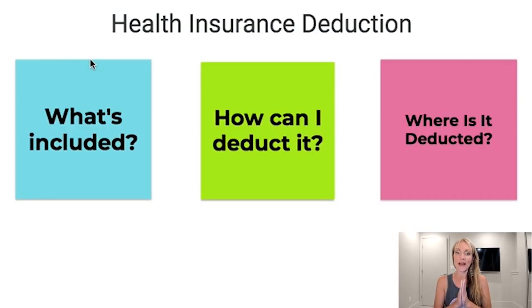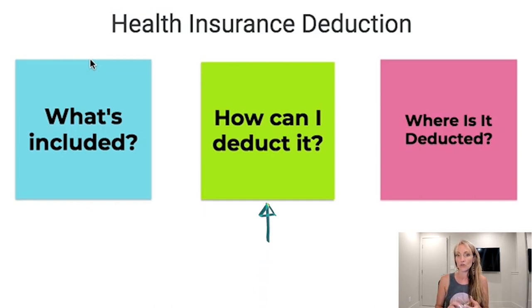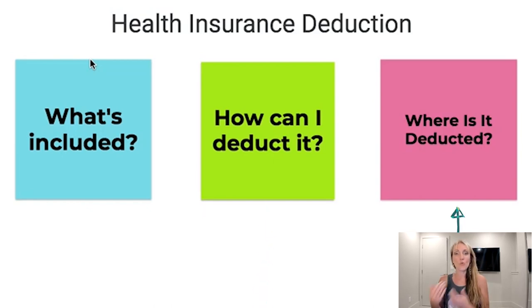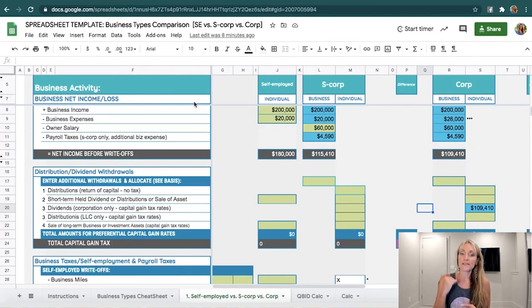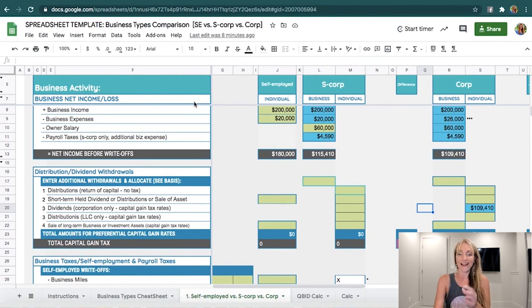Let's jump in to health insurance. We'll be looking at what the health insurance deduction is, what's included, how you can actually take the deduction, and where it's deducted on the forms. And lastly, we will take a peek at my business types comparison spreadsheet template where we'll be able to see the difference in health insurance under different business types.